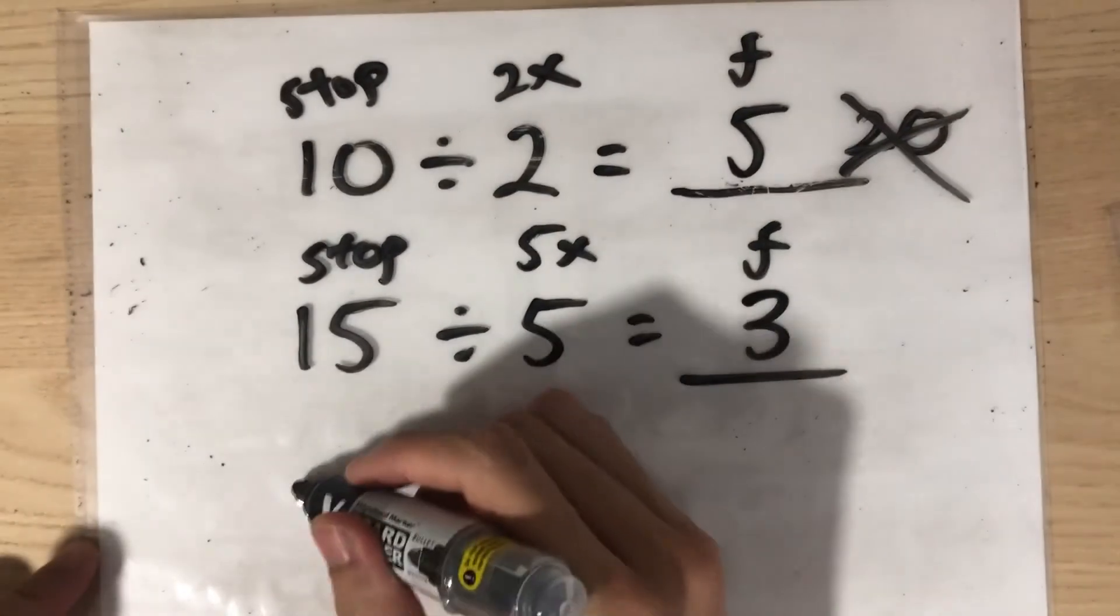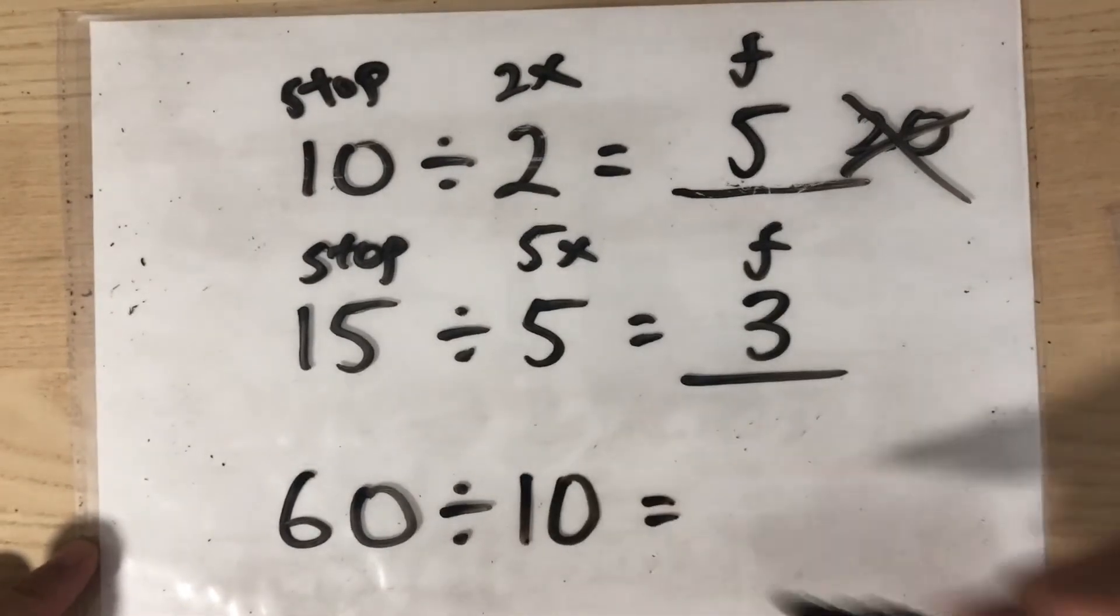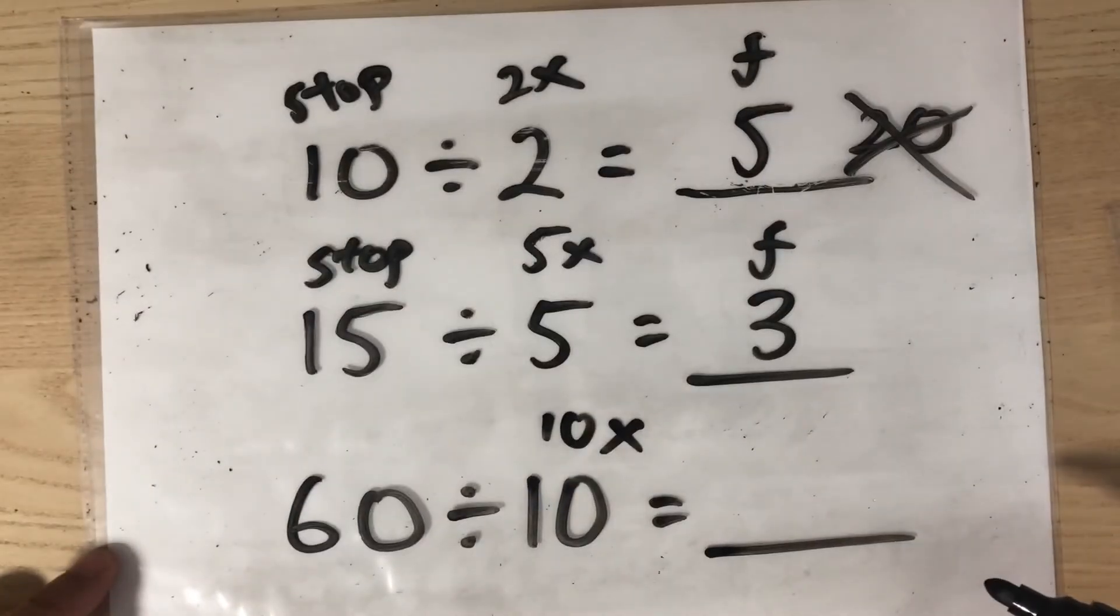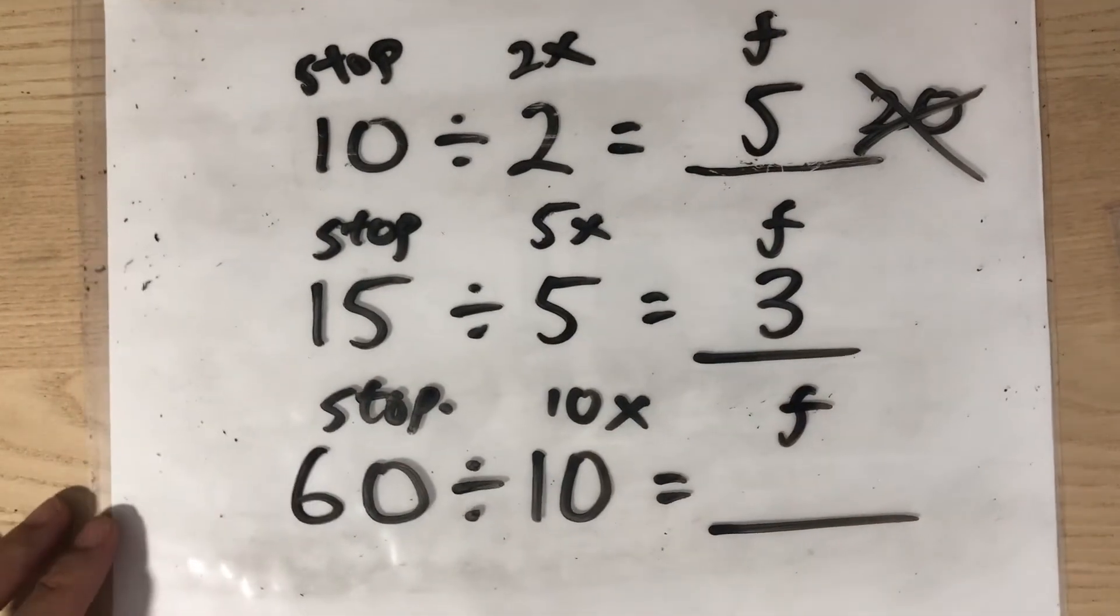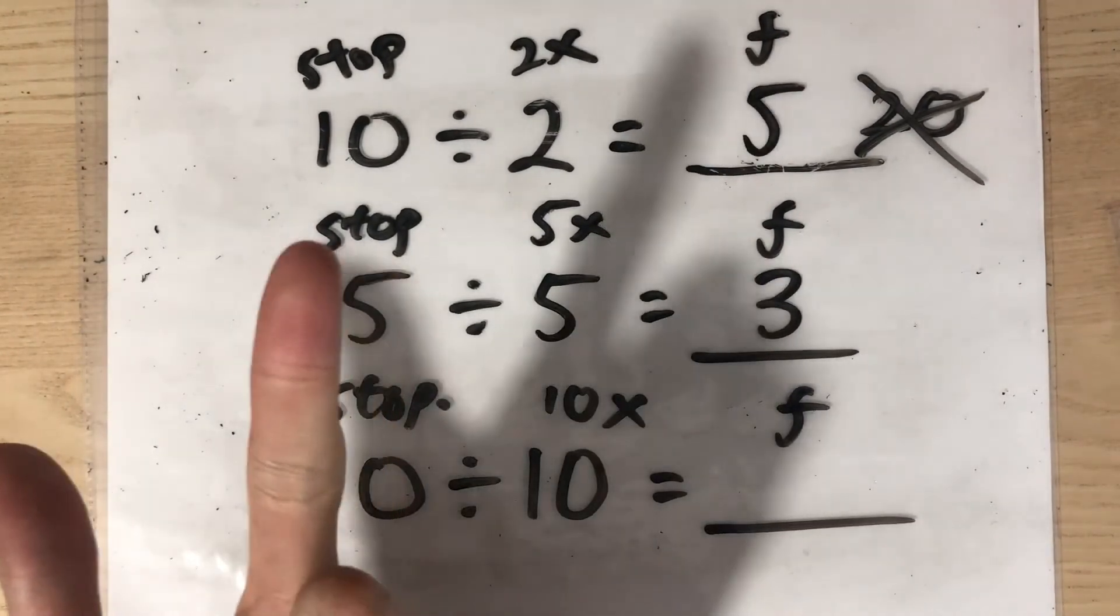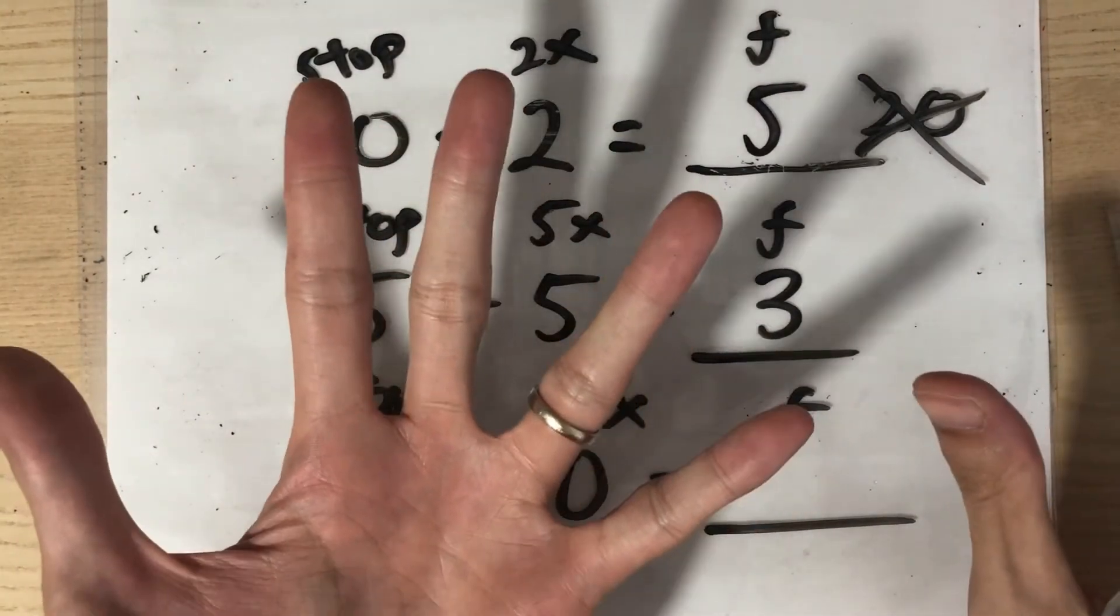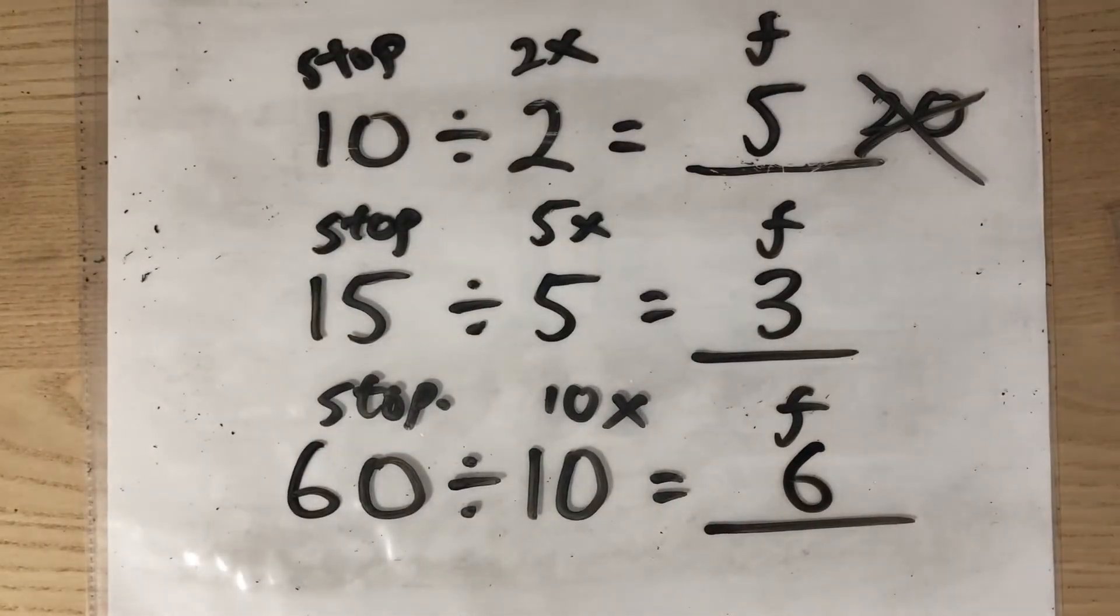Let's do another example. What is 60 divided by 10? We'll do the 10 times table until we get 60 and then we stop. The answer will be the number of fingers we are holding up. Let's do the 10 times table. 10, 20, 30, 40, 50, 60. How many fingers? 6. So the answer is 6. Do you see that?